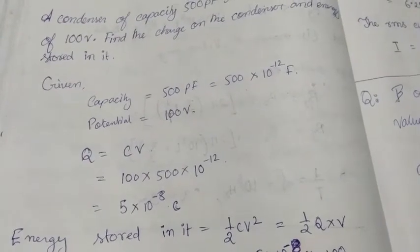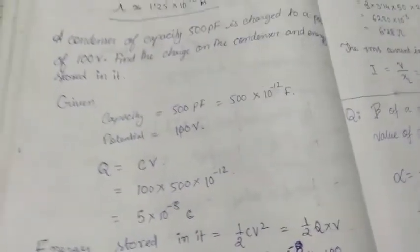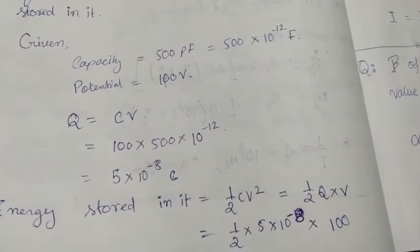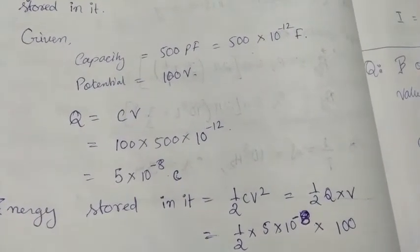So I will place 5 into 10 to the power minus 8 Coulomb. So half into 5 into 10 to the power minus 8 Coulomb.